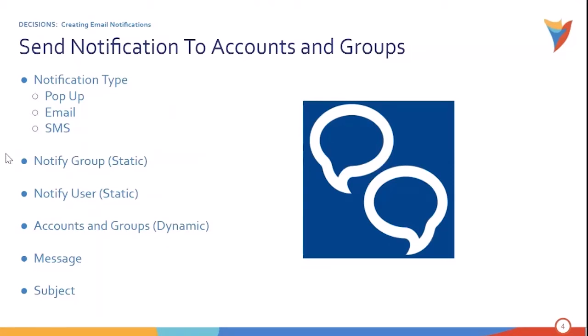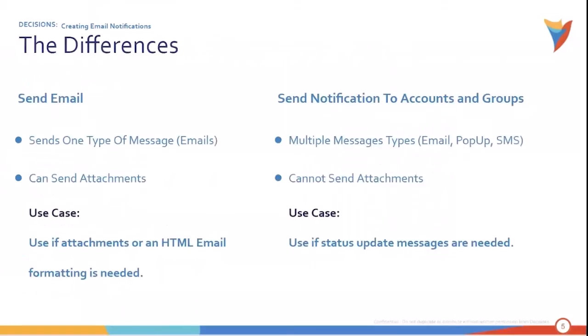The Send Notification to Accounts and Groups step not only sends emails but can also send SMS/text messages or show pop-ups to users. Its inputs are similar to that of an email, however instead of a list of email addresses, it takes a list of groups or accounts. It also takes a message and a subject. This step is useful when we just want to send a message to users, but we will not be able to send attachments — for attachments, use the Send Email step directly.